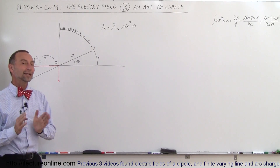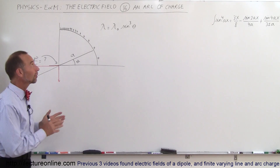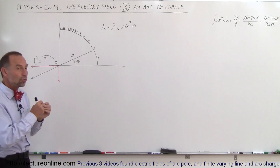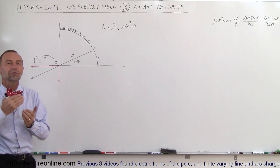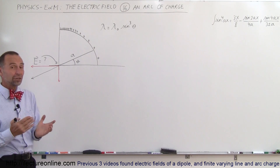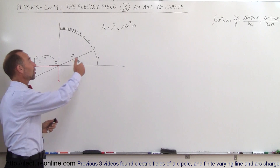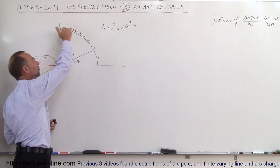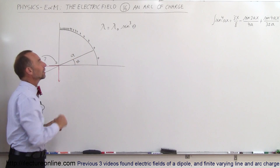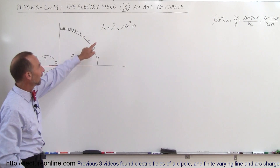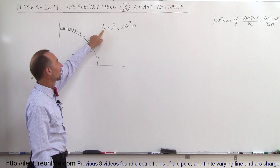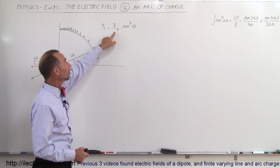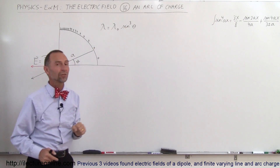Welcome to ElectronLine. Here we're going to do another example of how to find the electric field, but this case is going to be due to an arc of charge. It's not just any arc of charge — it is an arc of charge where the linear charge density changes with angle theta. So lambda, the linear charge density, is equal to some constant times the sine cubed of the angle theta.